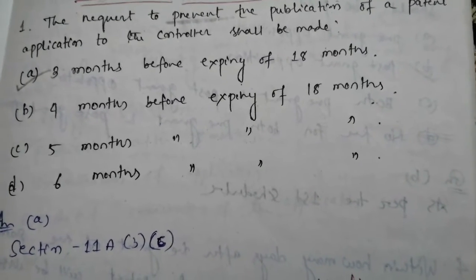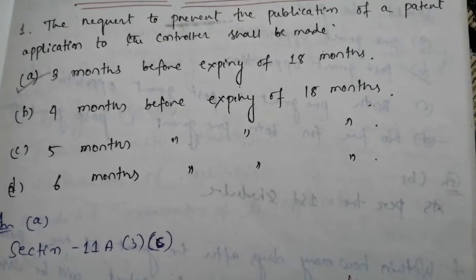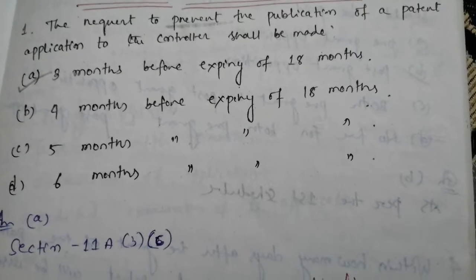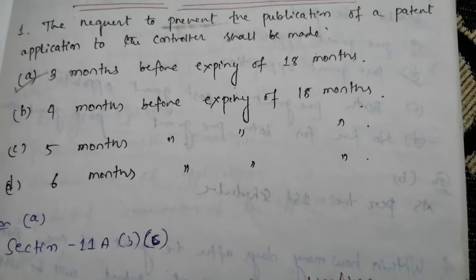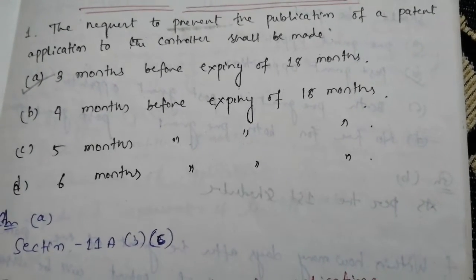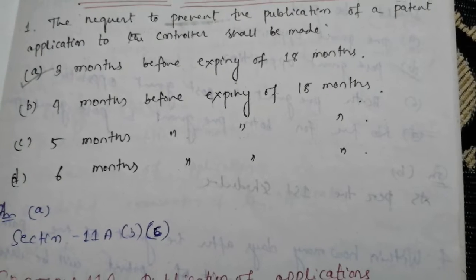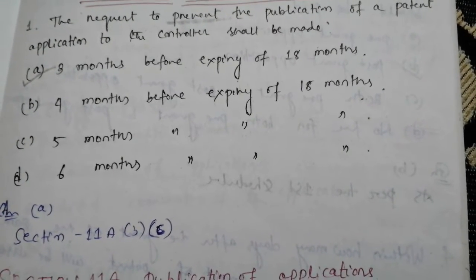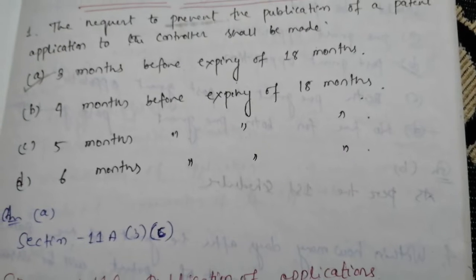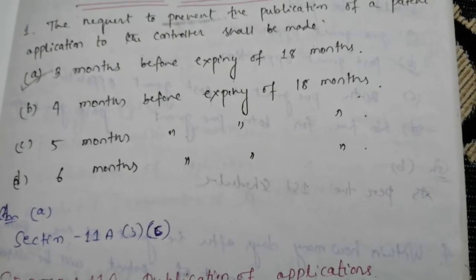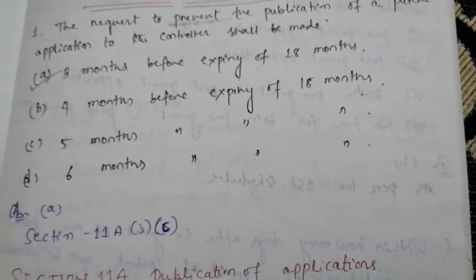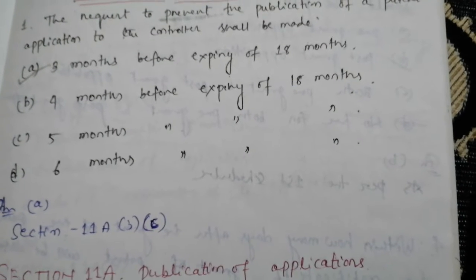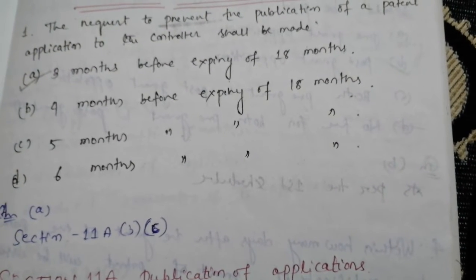Question number one: the request to prevent the publication of a patent application to the controller shall be made — option A: three months before expiry of 18 months; option B: four months before expiry of 18 months; option C: five months before expiry of 18 months; option D: six months before expiry of 18 months.